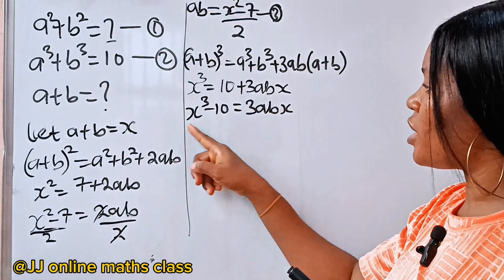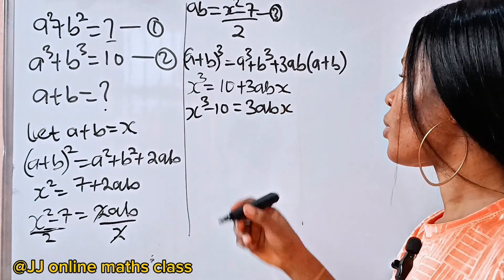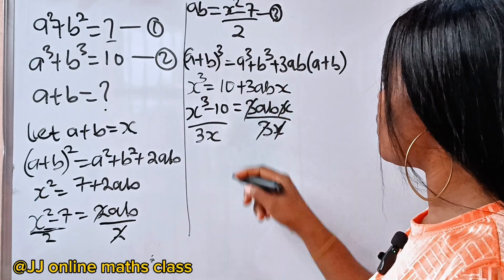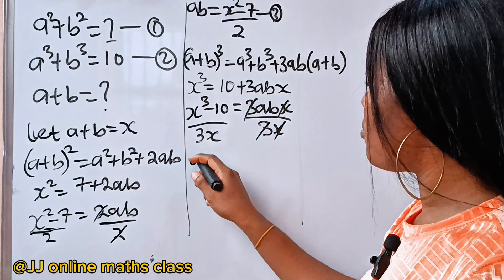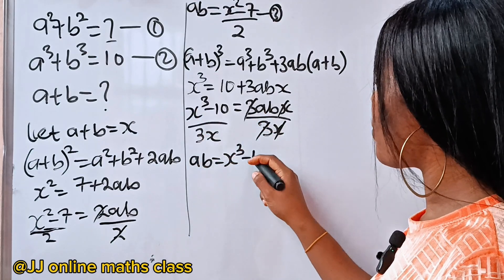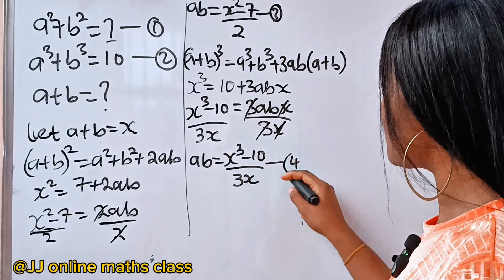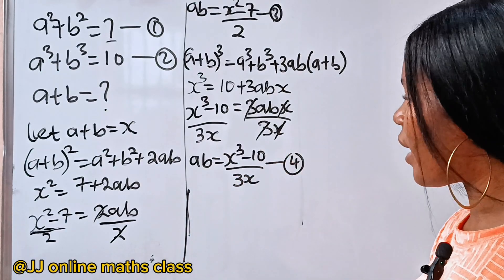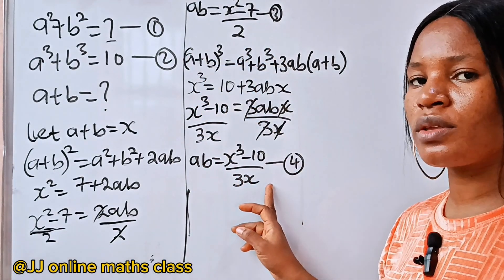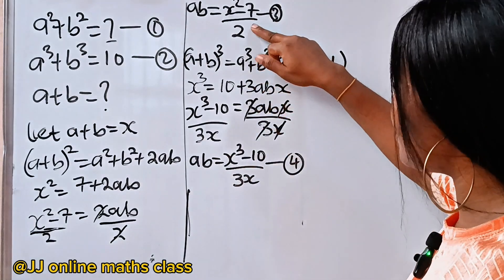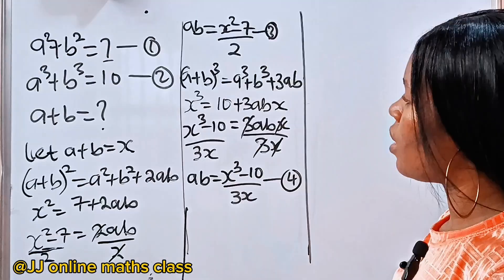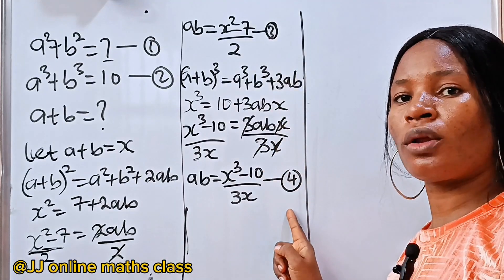To get ab here, we divide both sides by 3x. So ab is equal to x to the power of 3 minus 10 divided by 3x. Let's call this equation 4. Since ab equals equation 3 and ab equals equation 4, we can equate them: x squared minus 7 over 2 equals x cubed minus 10 over 3x.